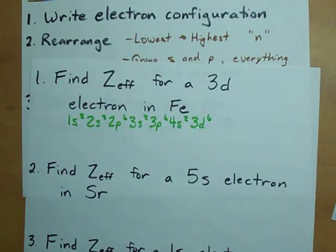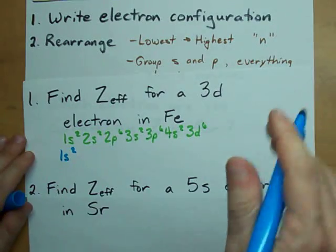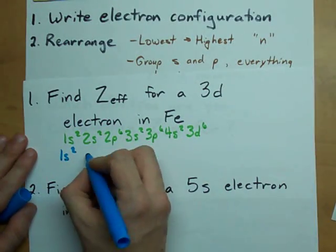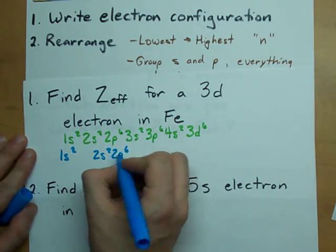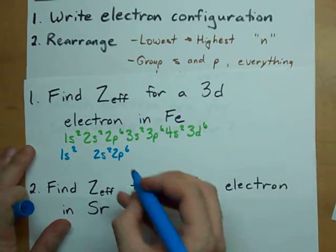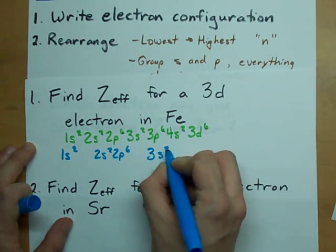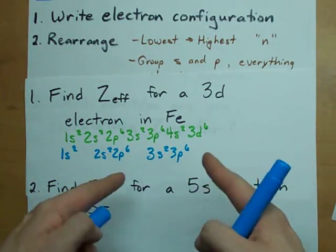In the first shell, we have 1s2. In the second shell, we have 2s2, 2p6. I'm going to keep those together because it's an s and a p. We'll group those together. In the third shell, we have 3s2, 3p6. Keep those grouped together because it's s and p.